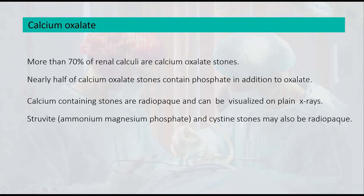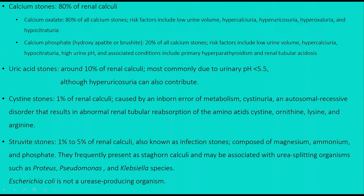Also don't forget the cystine stone, associated with congenital conditions; both are also radio-opaque. In summary, 70 to 80% of renal calculi are calcium oxalate, caused by hypercalciuria, hyperuricosuria, hyperoxaluria, and hypocitraturia.